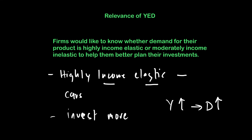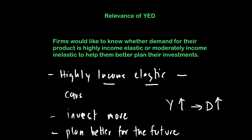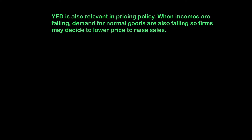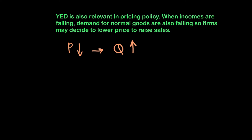Knowing how elastic or inelastic their good is relative to income helps firms plan better for the future, whether incomes are rising or falling. From a pricing policy perspective, YD also matters. If incomes are falling and the firm makes normal goods, there will be a fall in demand. To arrest this fall, the firm could lower its price — increasing quantity by more, since the good is normal — and thereby raise sales even during a recession or period of falling income.